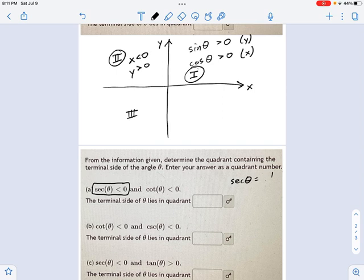Secant of theta equals one over cosine of theta. This is the reciprocal identity. If secant is negative, some negative number equals one over cosine. Do you see why cosine will have to be negative also? I don't actually know what that negative number is. I don't need to. As long as I know it's a negative sign, then cosine itself also has to be negative. So that means x is less than zero. That's a clue that you can use to locate your angle.